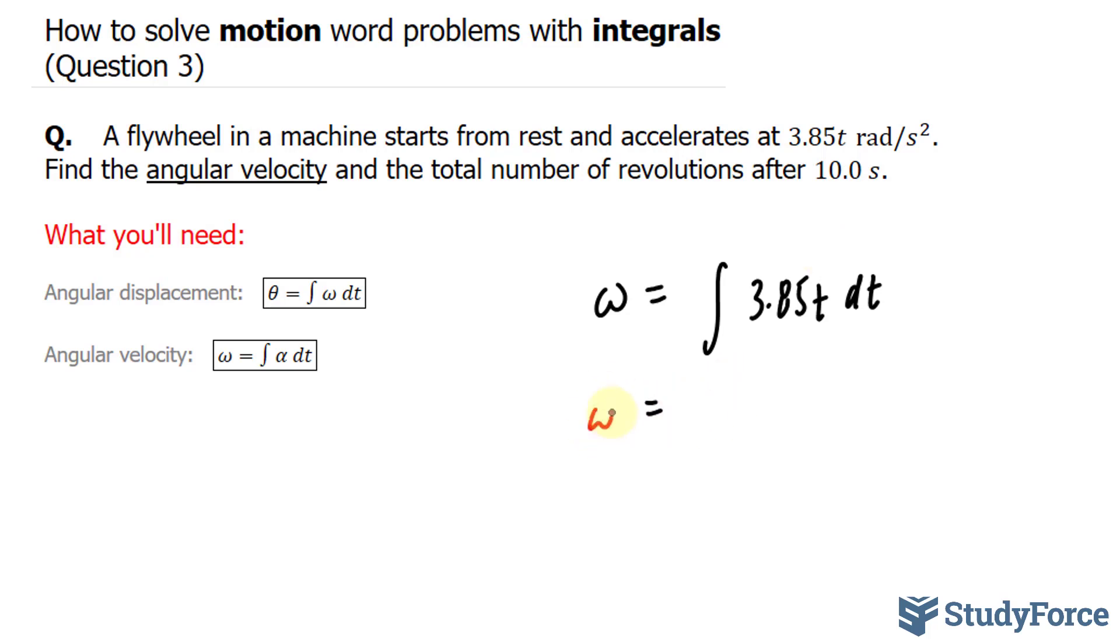This gives us omega is equal to 3.85 t to the power of 2 over 2, plus our arbitrary constant c.